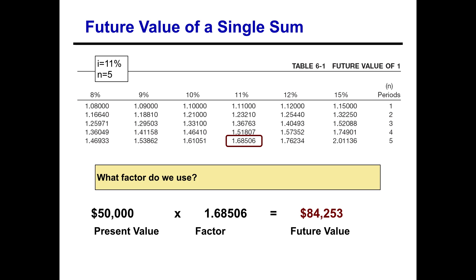You take that factor and multiply it times the present value amount of the lump sum. Remember, that factor takes everything into consideration — the periods, the interest rate, the compounding. So you multiply it by that lump sum amount and that gives you your future value. This tells us that if we invested $50,000 today at 11% compounded annually, at the end of five years we would have accumulated $84,253.